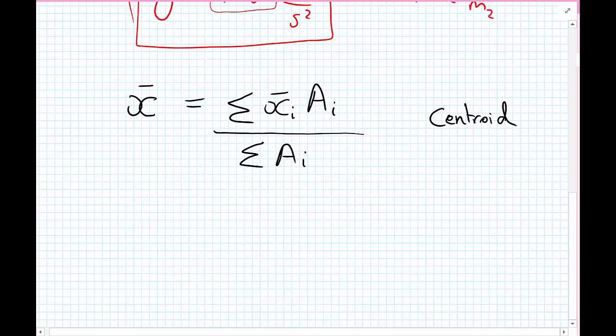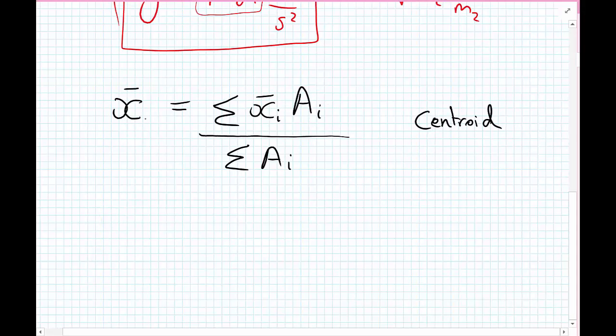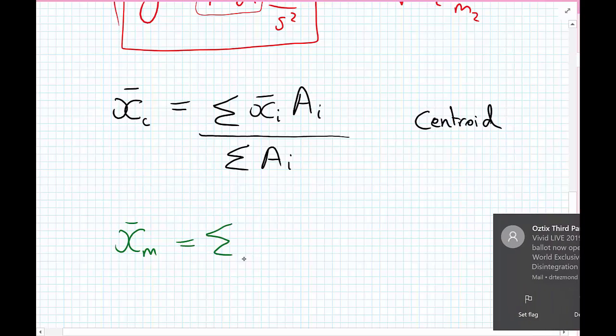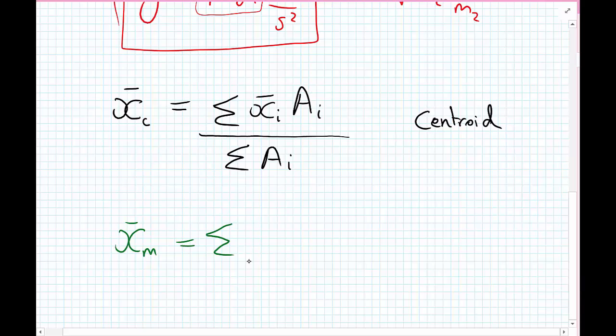Let's call x bar for the centroid c for this page. X bar for the mass would be the same procedure of taking moments, like being on a seesaw. Now we have the distance to the center of mass of a given box multiplied by the mass of these individual boxes, divided by the total mass of the boxes. This would be called the center of mass or the center of gravity.